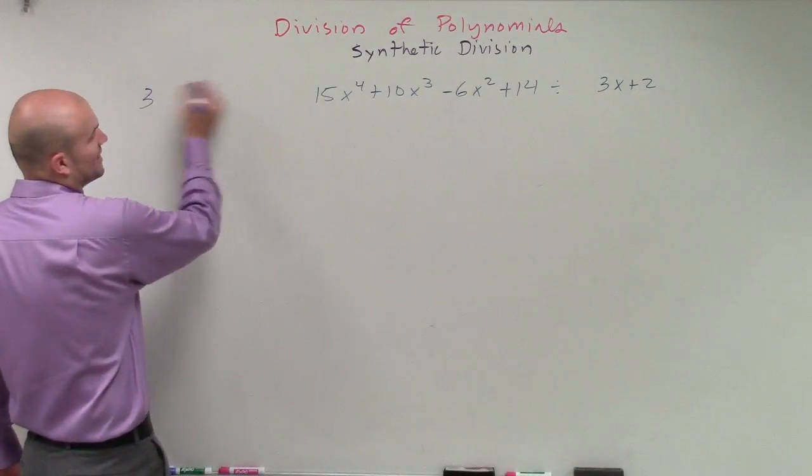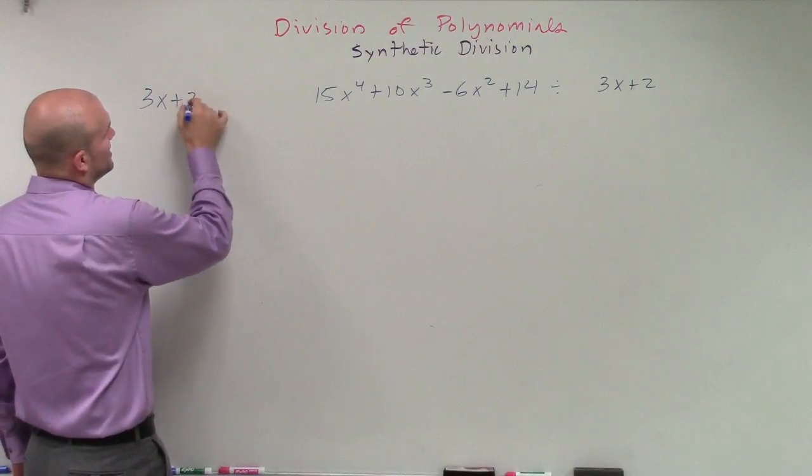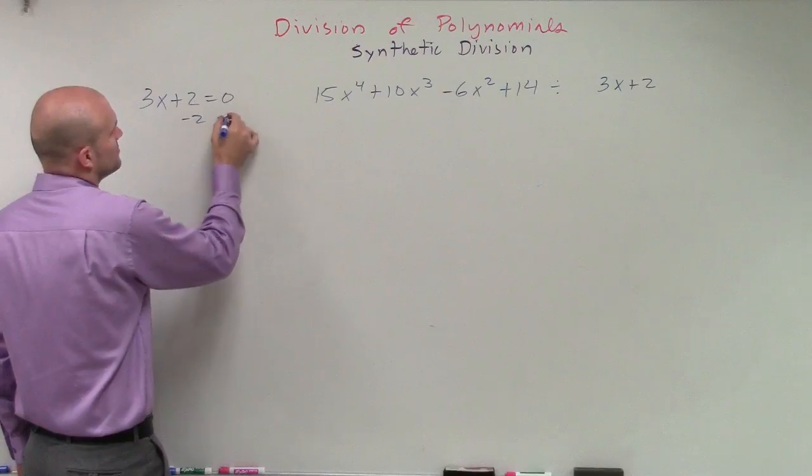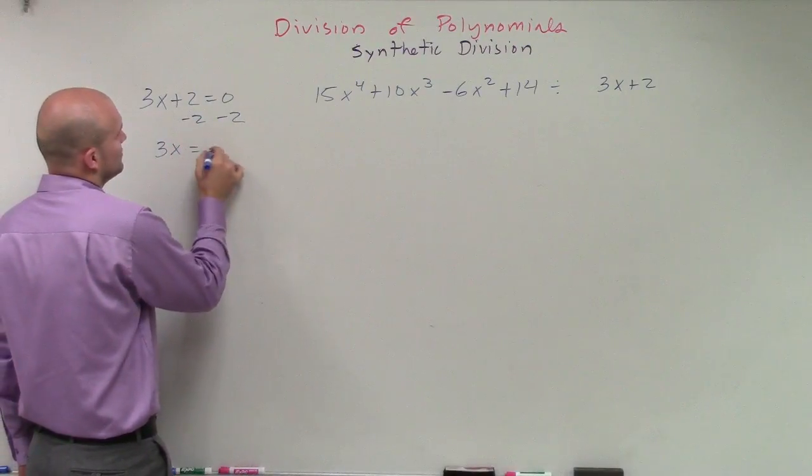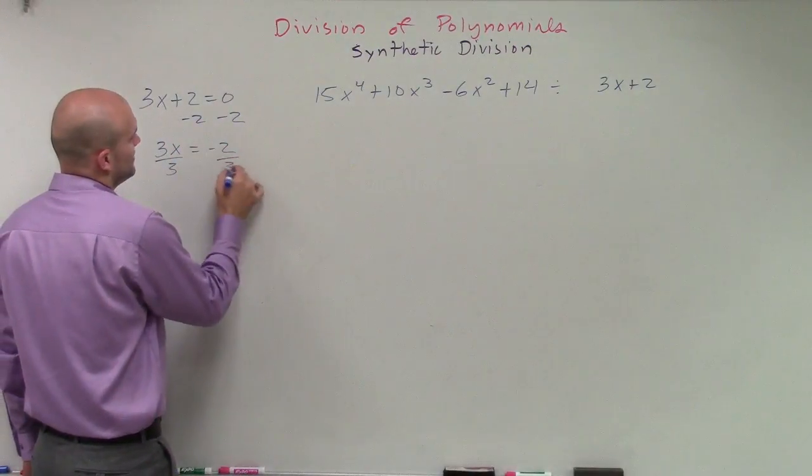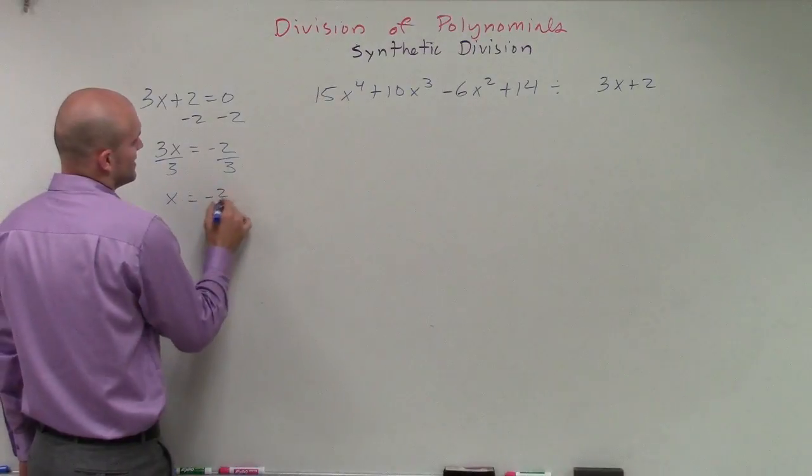So in this case, we'll just take our divisor, 3x plus 2, and we'll set it equal to 0. So subtract 2. So we have 3x equals negative 2, divide by 3, x equals negative 2 thirds.